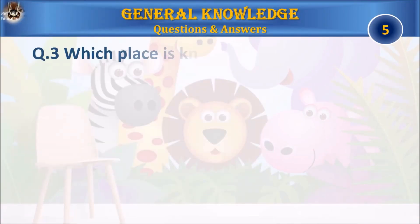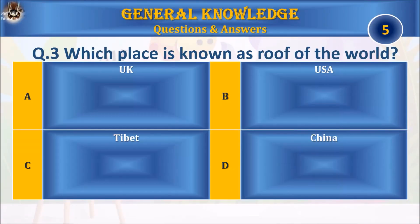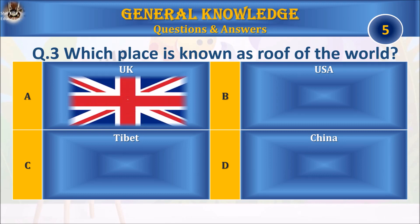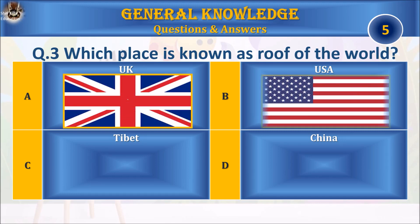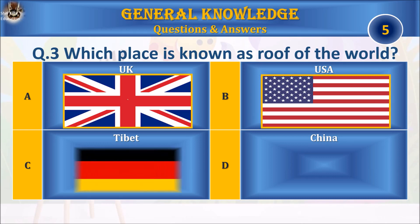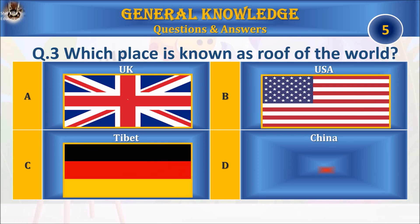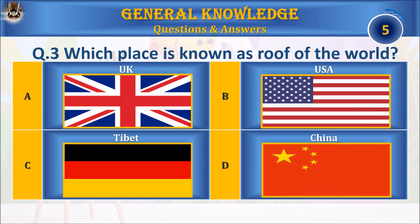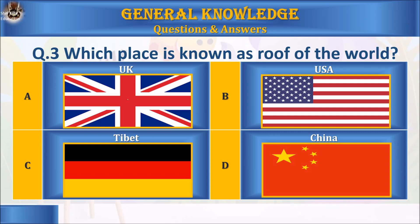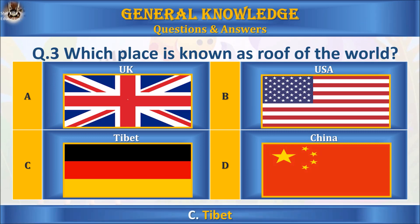Question 3: Which place is known as the roof of the world? A) UK, B) USA, C) Tibet, or D) China. Your time starts now. The answer is C) Tibet.